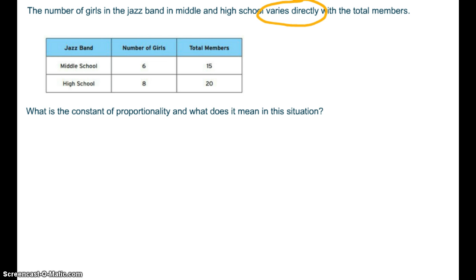So the first thing that we want to do, we already have our table so we don't need to set it up. We need to figure out which is X and which is Y. Well, in this situation, what depends on what?